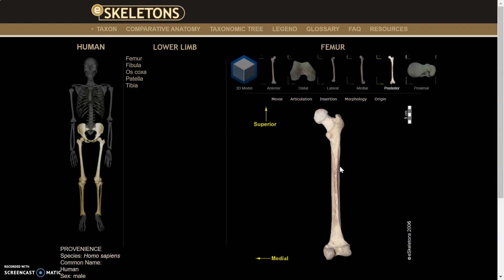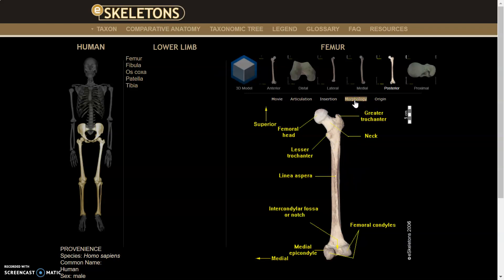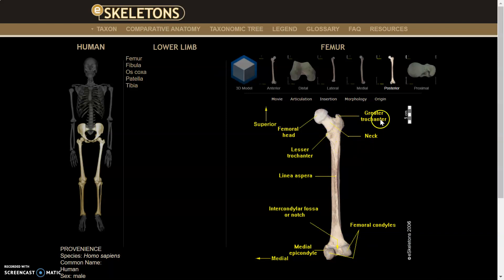The femur is really recognizable for many reasons. This website is helpful because it can give you the morphology. Here is the femoral head, here is the linea aspera, the intercondylar notch, and the medial and lateral epicondyles — both considered the femoral condyles. And here are the greater trochanter and lesser trochanter.